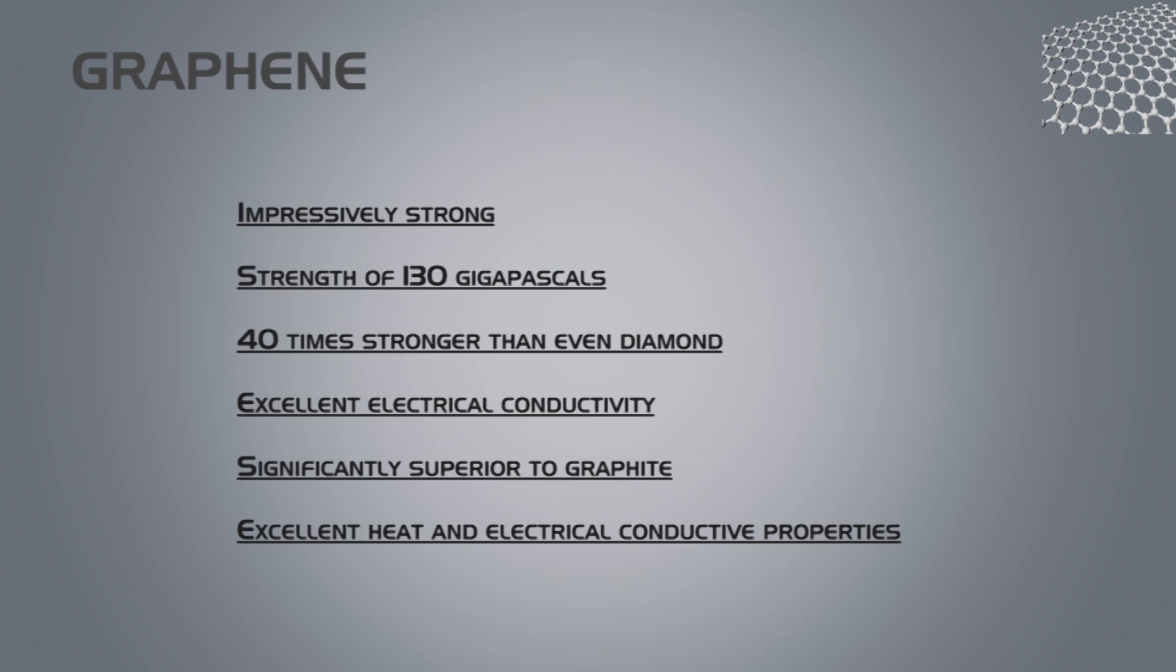Graphene is over 40 times stronger than even diamond. Graphene has excellent electrical conductivity properties, as there is a free pi electron for each carbon atom. All in all, graphene is significantly superior to graphite and even standard structural steel. The excellent heat and electrical conductive properties of this material make it excellent to replace many conventional battery components.